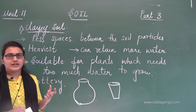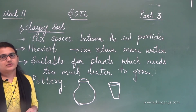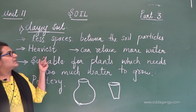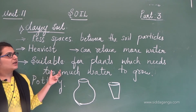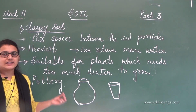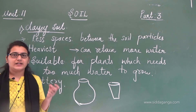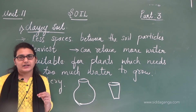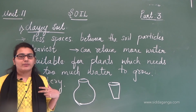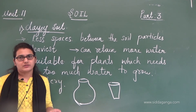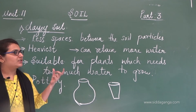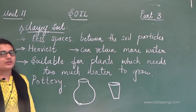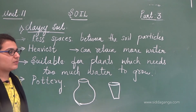Clayey soil has less spaces between the soil particles, so the arrangement is very compact and tight. Since it is very tight and compact, it holds too much of water. That is why it is suitable for plants which need too much water to grow, and it is the soil used in making pottery.